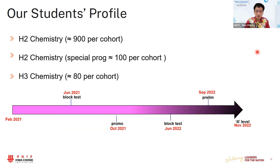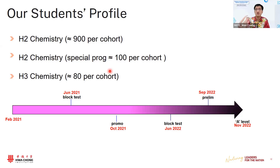Now we are going into the proper presentation. But first, let us share the context of our students. In Huachong Institution's college section, the cohort for H2 Chemistry is about 800 to 900 students. We also have about 100 students taking a special program — it's more of a program where we are able to do more with students, quite similar to school-based gifted education in secondary school.